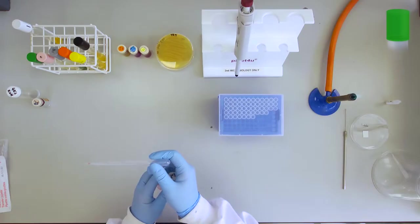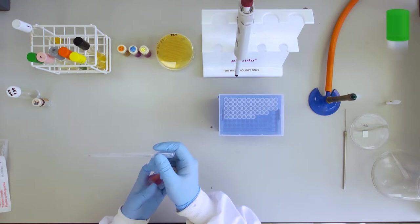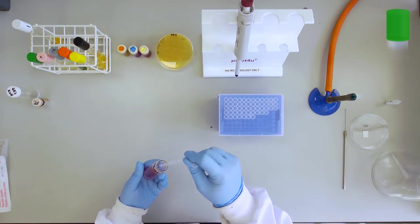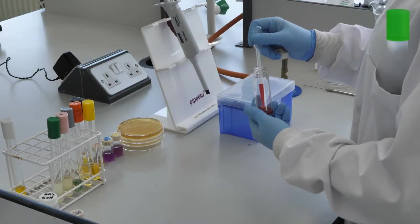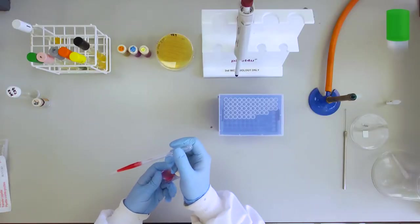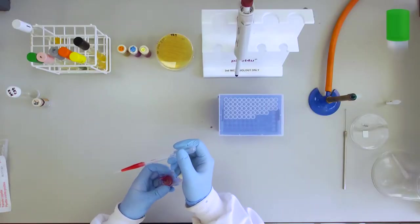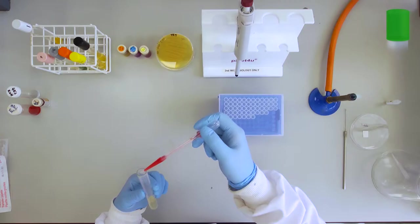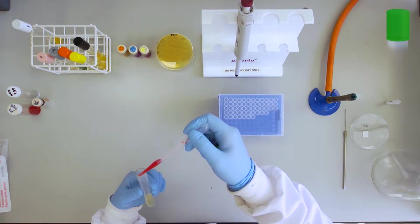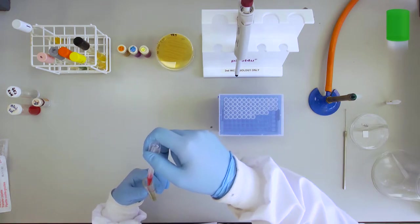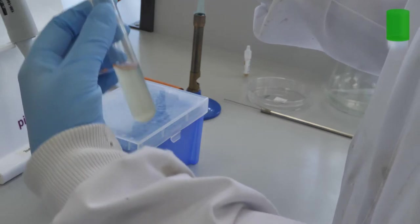For the methyl red test a few drops of methyl red solution must be added to the test tube. If the bacterium is capable of breaking down glucose and an acid has been produced, once the methyl red is added, the media will change to a bright red colour. This is a positive methyl red test.